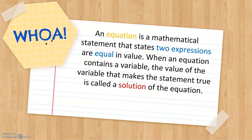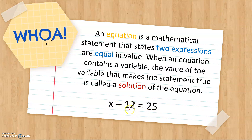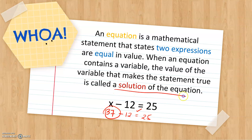Let's start with an equation. Recall that an equation is a mathematical statement that states two expressions are equal in value. When an equation contains a variable, the value of the variable that makes the statement true is called a solution of the equation. For example, if we have the equation x minus 12 is equal to 25, try to think of a number that when subtracted by 12 will give us 25. So here we have x is 37. 37 minus 12 will give us 25. Therefore, 37 is a solution of this equation x minus 12 is equal to 25.